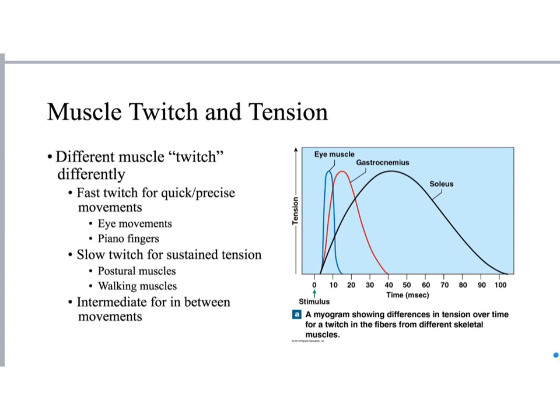In general, there are three kinds of muscle: fast twitch, slow twitch, and intermediate twitch, which has properties of both and is in the middle. What we mean is how long does it take the initial signal to produce maximum tension. The fast twitch muscle example is the eye muscle - you can see how quickly the tension rises and peaks, and then how quickly it falls. Fast twitch muscle gives you a very quick but short-lived amount of tension.